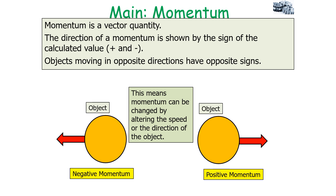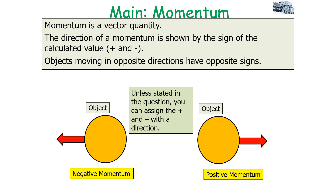Objects moving in opposite directions will have opposite mathematical signs. This means the momentum of objects can be changed by either altering the speed or the direction of the object. Unless it's stated in a question, you can decide which direction you want to assign the positive values to and which direction the negative values to.